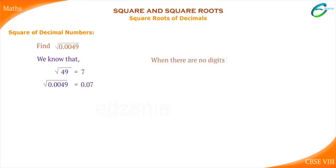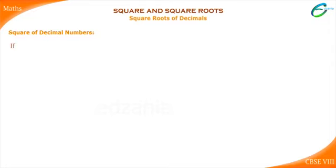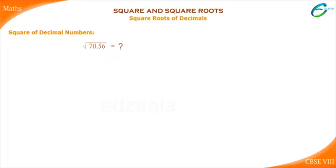When there are no digits before the number, we have to consider zeros as digits. If the square root of 7056 is 84, then what is the value of the square root of 70.56? It is 8.4. If we do not have the value of the square root of 7056, then how can we find the value of √70.56? We have to use the division method.